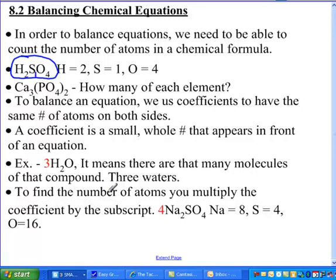What about calcium phosphate? How many calciums are in that? Three is good. How many phosphorus? Two is correct. And how many oxygen? Eight is correct. This subscript right there times that subscript gives you eight oxygen; two times one gives you two phosphorus.